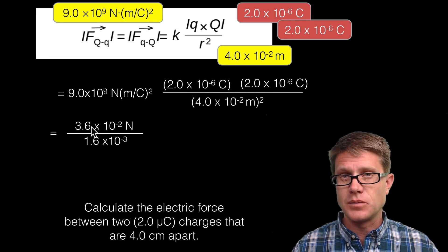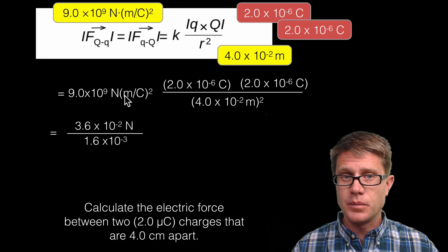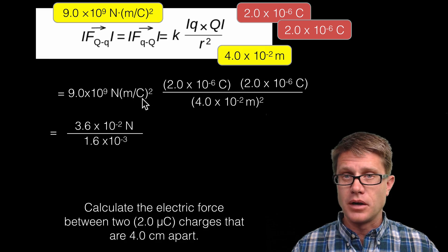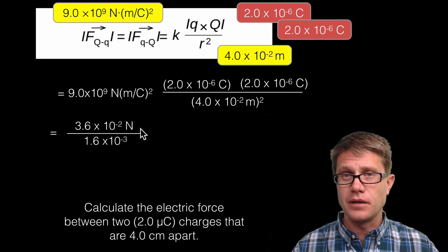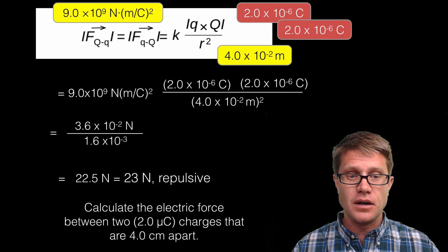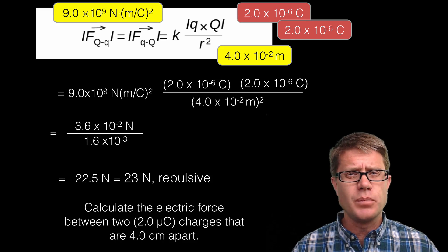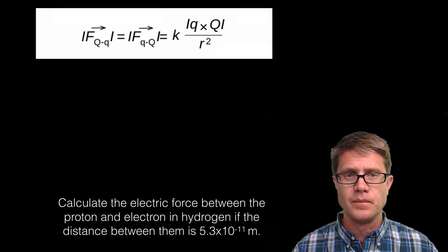Multiplying everything across the top I get 3.6 times 10 to the negative 2 newtons times meters squared. The meters squared on top and bottom cancel, and coulombs squared on top and bottom cancel, leaving units of newtons. Solving that gives 22.5 newtons, or using significant digits, 23 newtons. Since both charges are positive, that is a repulsive force — it is a vector between the two.